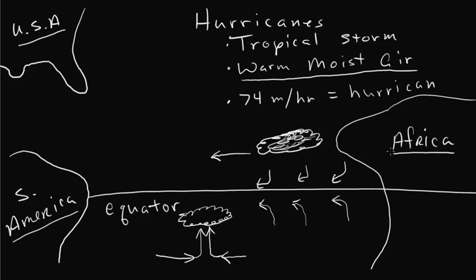These converging air masses rise, and just like in any storm, the rising warm air condenses and starts the whole process of storm formation with the updrafts, downdrafts, lightning, and everything we've spoken about before. But the difference is it grows and grows, because the amount of energy it gets from the warm, moist air from the ocean just continues to feed it.